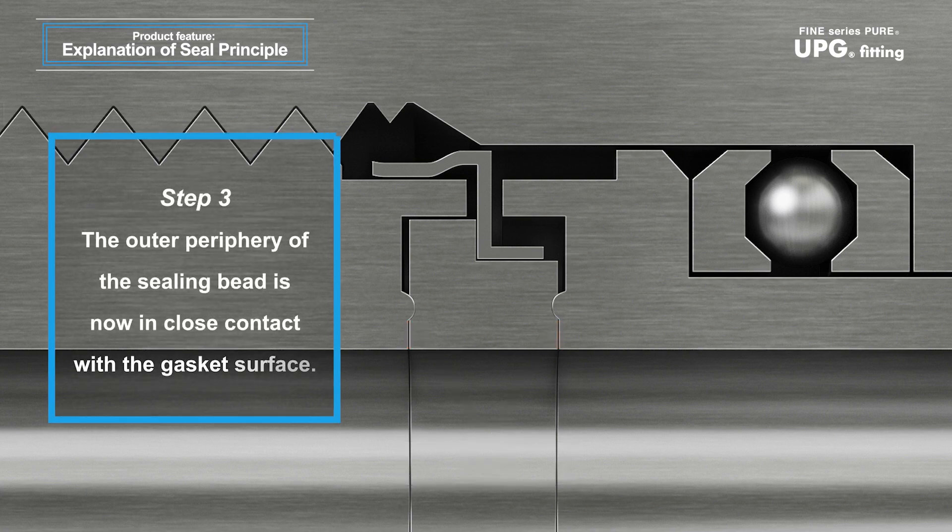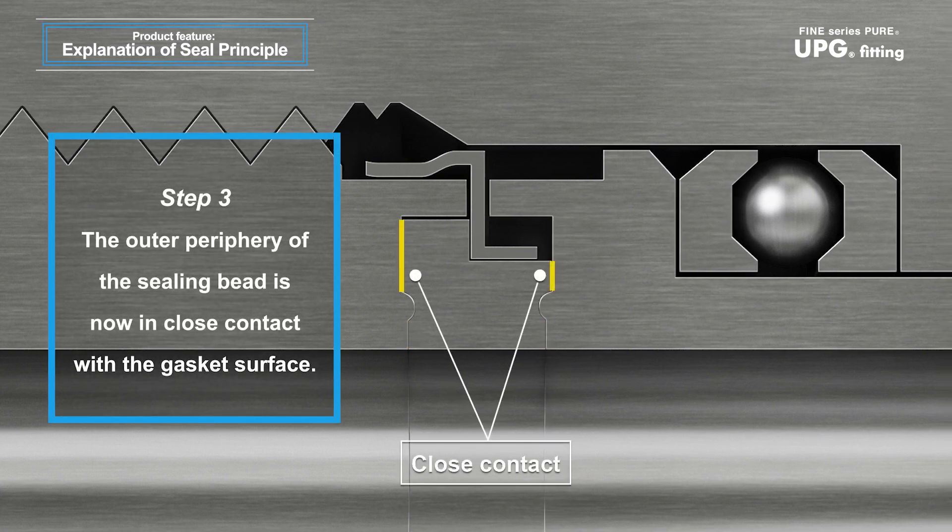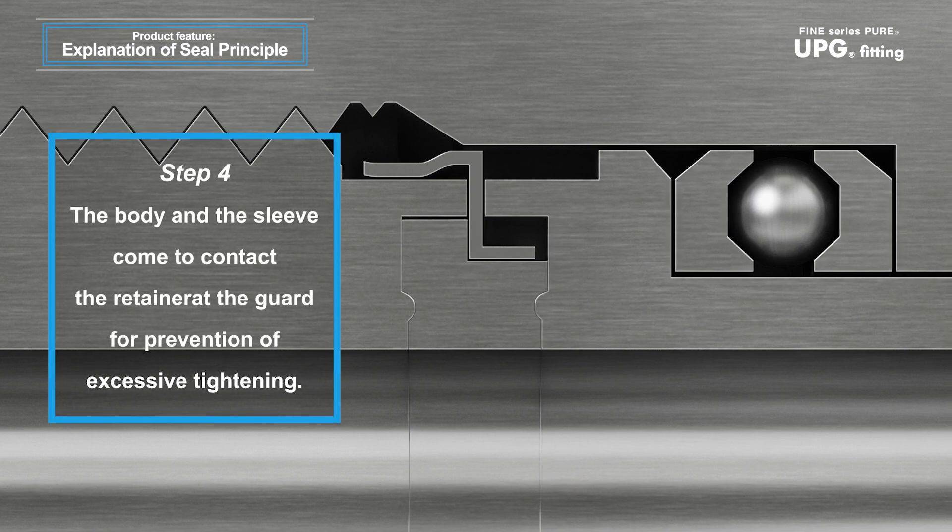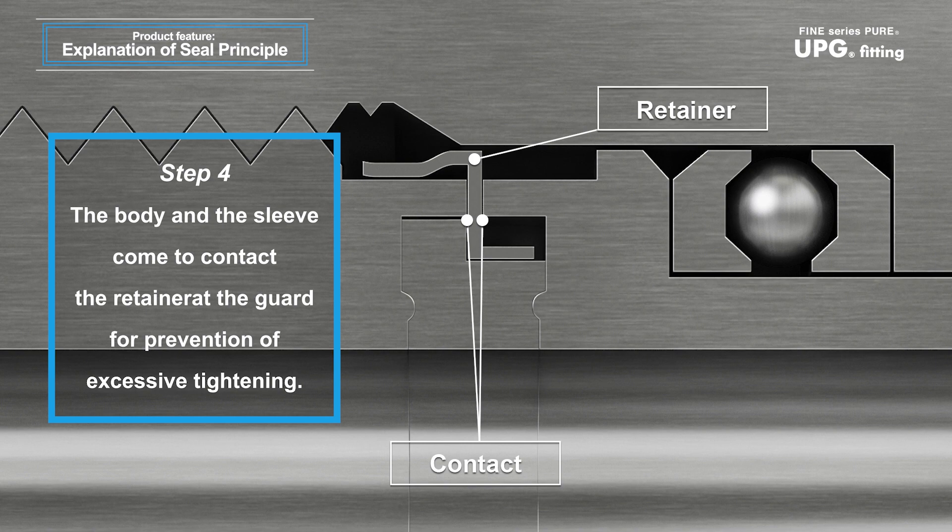Step 3: Tightening the nut further allows the outer periphery of each rounded part to closely contact the gasket surface. Step 4: When the tightening process is finished, the body and the sleeve come into contact with the retainer at the guard for prevention of excessive tightening.